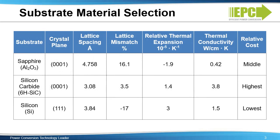Heteroepitaxy is a process whereby one type of crystal structure is grown on top of a different crystal. Because GAN crystals have not been readily available and are very expensive to grow, there has been much work focused on growing GAN crystals on top of a more convenient platform, such as sapphire, silicon carbide, or more recently, silicon.